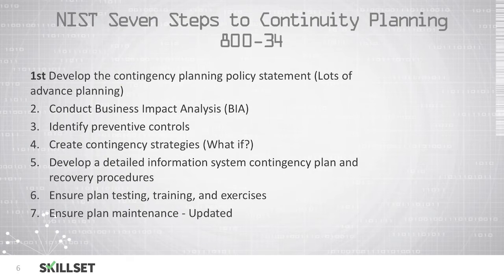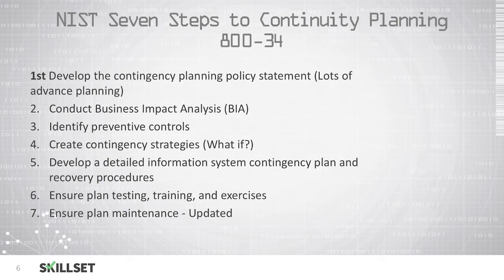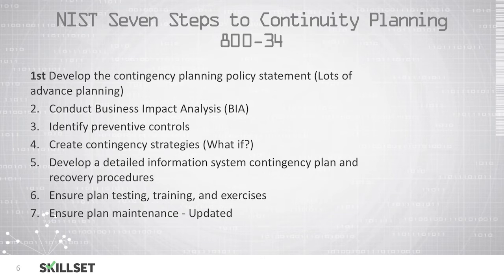The fourth step is to create your contingency strategies, such as what you will do in the event of a fire or other emergency. The fifth step is to develop detailed information system contingency plans and recovery procedures — keep these procedures off-site in case your facility is destroyed. The sixth step is to test the plan, provide training to employees, and conduct exercises to simulate a disaster. The seventh step is to maintain and update the plan as threats or technology change.